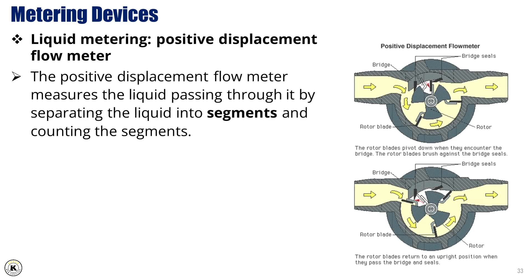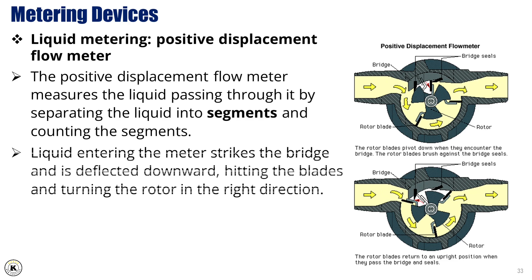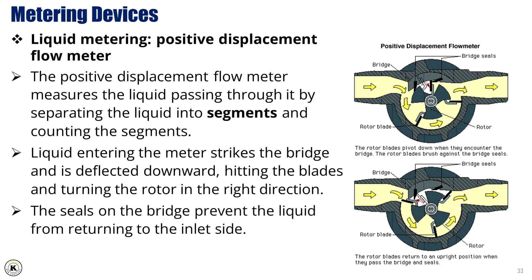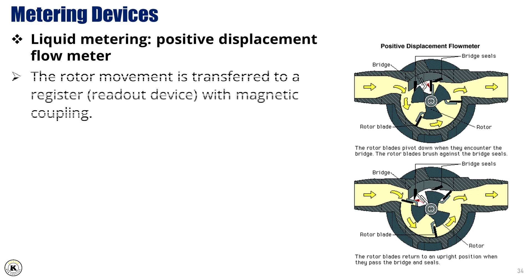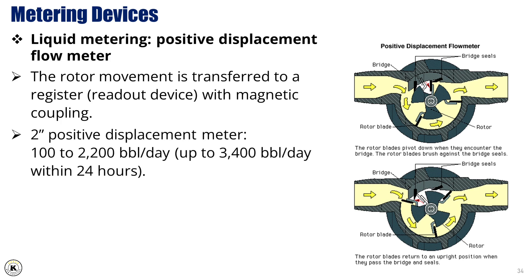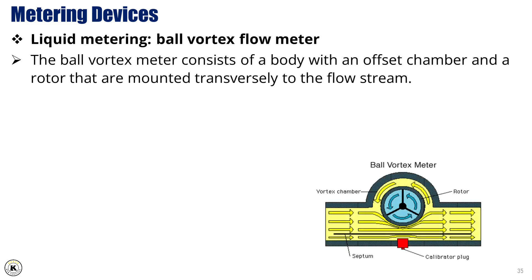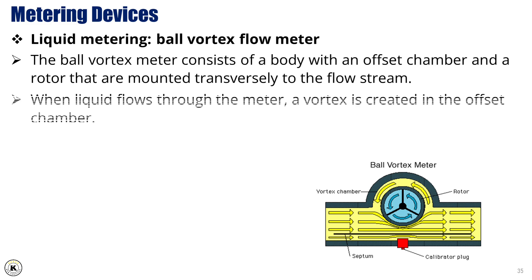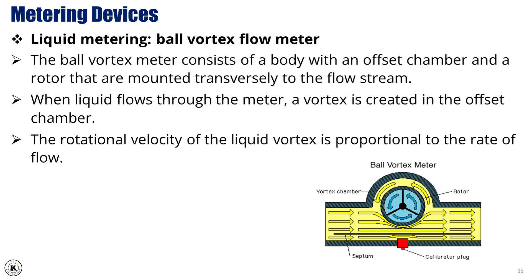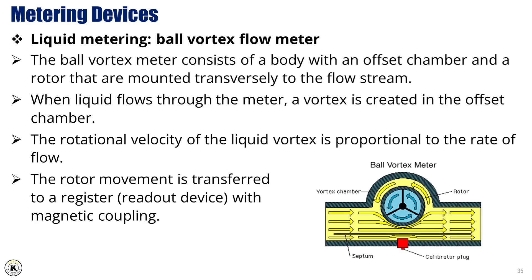The positive displacement flow meter measures the liquid passing through it by separating the liquid into segments and counting the segments. Liquid entering the meter strikes the bridge and is deflected downward, hitting the blades and turning the rotor. The seals on the bridge prevent the liquid from returning to the inlet side. The rotor movement is transferred to a register — a readout device with magnetic coupling. The 2-inch positive displacement meter ranges from 100 to 2,200 barrels per day, up to 3,400 barrels per day within 24 hours. The vortex meter consists of a body with an offset chamber and a rotor mounted transversely to the flow stream; a vortex is created in the offset chamber and the rotational velocity of the liquid vortex is proportional to the rate of flow.